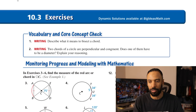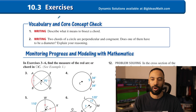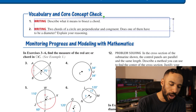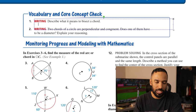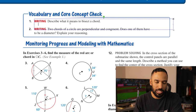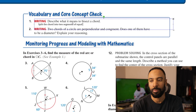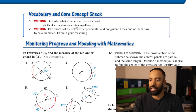Now the official problem set. Question 1 asks: describe what it means to bisect a chord. To bisect a chord is the same as bisecting any segment — you're splitting it into two congruent parts, so split the chord into two segments of equal length.